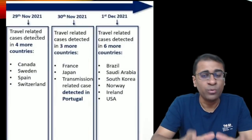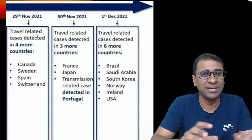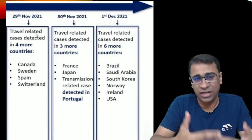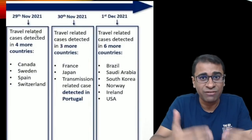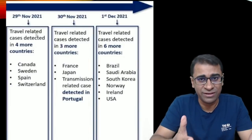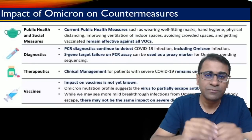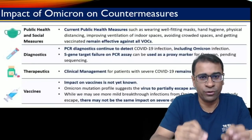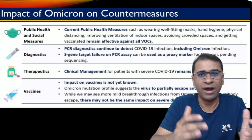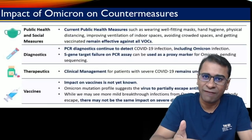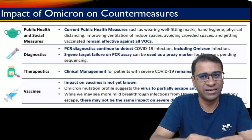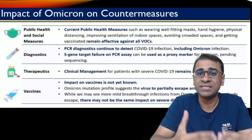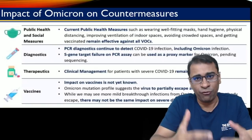We have to understand why are the cases in India only 21 — is it low or high? And what are the chances of this increasing? Or are we going into a third wave? To understand that, we should first understand what is the impact of Omicron on countermeasures. We all know we have to follow social distancing, look at diagnostic processes, therapeutics, and vaccines. To understand this, we should first understand the basic structure of Omicron.